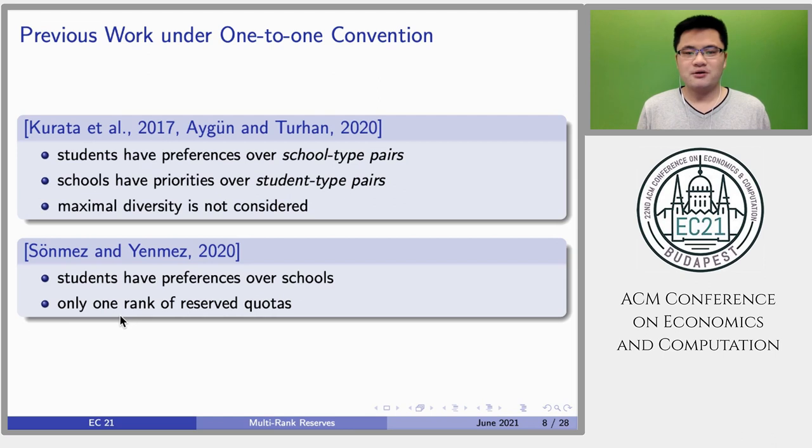The working paper by Somers and Yermas is closely related to ours. In fact, we are inspired by their work. However, they focus on one rank of quotas, and it is relatively easy to satisfy maximal diversity. In contrast, we study a harder problem with multiple ranks of quotas, and we come up with a more complicated approach to optimally achieving diversity goals.